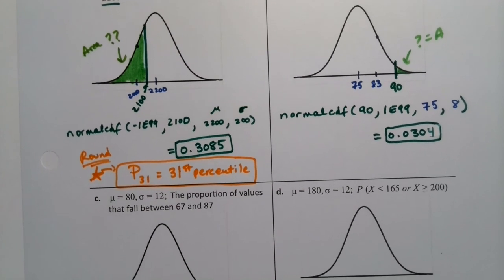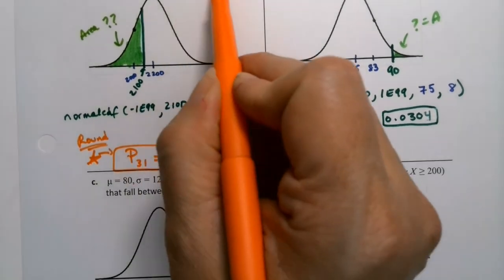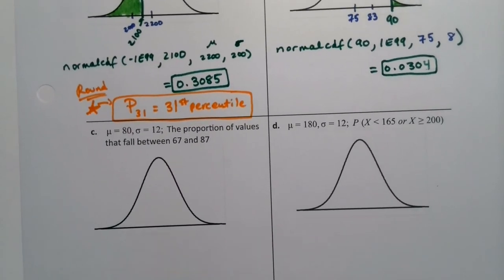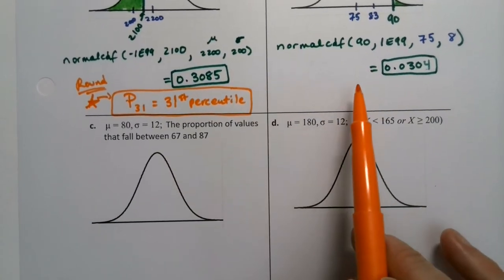And we're only rounding that because it's a percentile. Percentiles get rounded. So that's why we're doing that one. Back I go. Sorry. So now we got those two done. Let's go back.